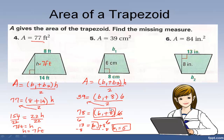Let's check: if b sub 1 is 5, then 5 plus 8 is 13, times the height of 6, divided by 2. 6 divided by 2 is 3, and 13 times 3 is 39. It checks out.